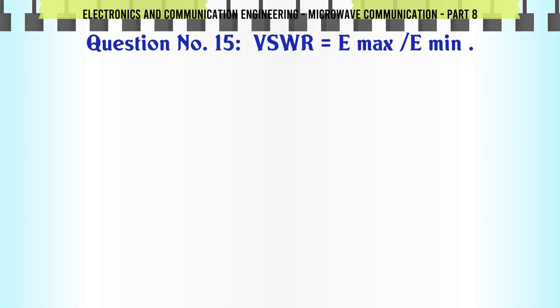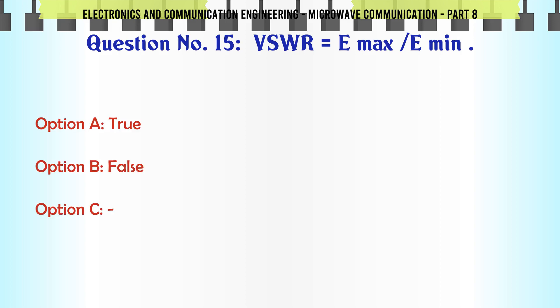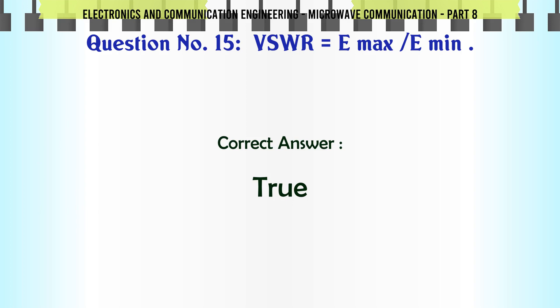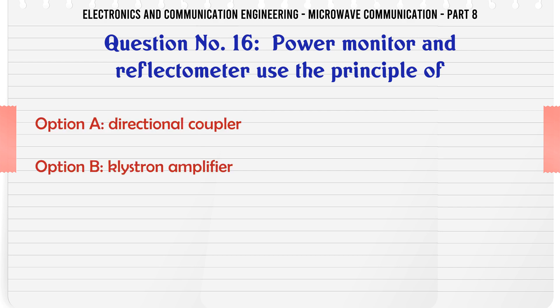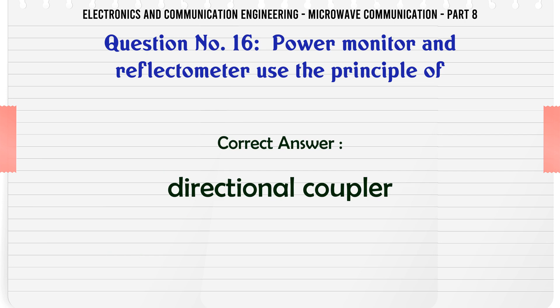VSWR = E_max / E_min — A. True, B. False. The correct answer is True. Power monitor and reflectometer use the principle of — A. Directional coupler, B. Klystron amplifier, C. Gunn diode, D. TWT. The correct answer is Directional coupler.